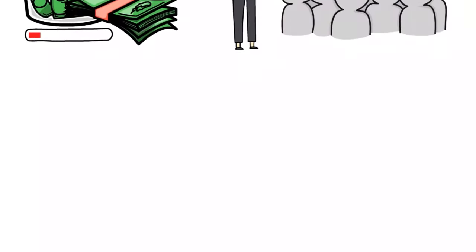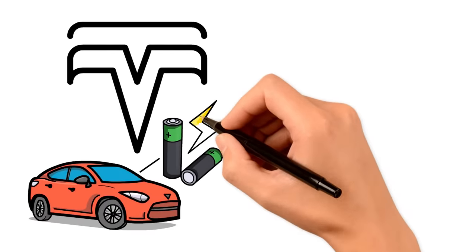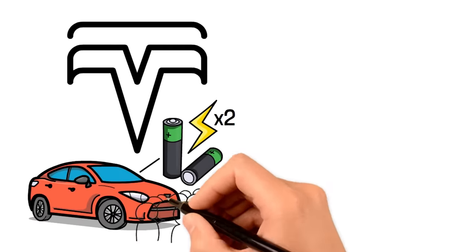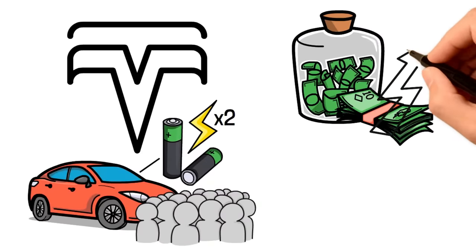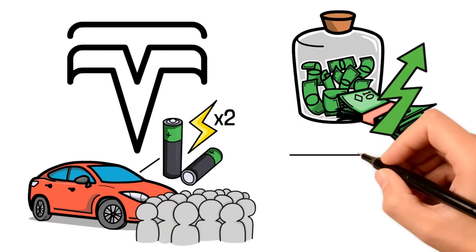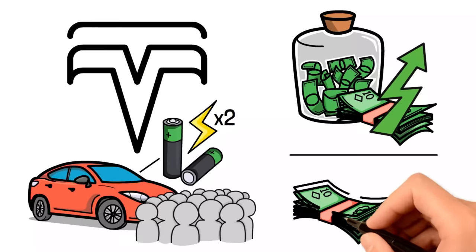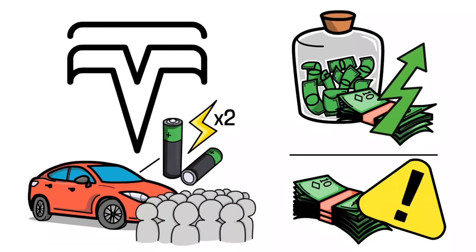But the opposite can happen too. Let's say Tesla manages to create a battery that charges twice as fast and can drive you double the distance on a single charge. This would boost their sales massively, and now the amount you invested doubles and shows no sign of slowing down anytime soon. That's the thing about investing in individual companies. You can get massive returns, but it's also way more risky because if you don't make a good choice, you can lose everything.